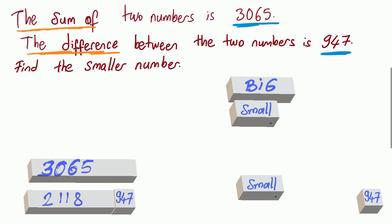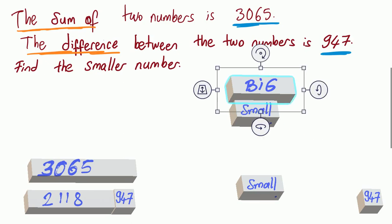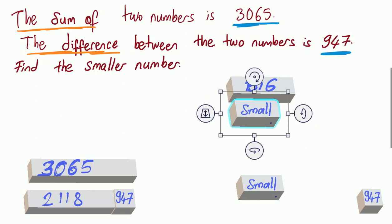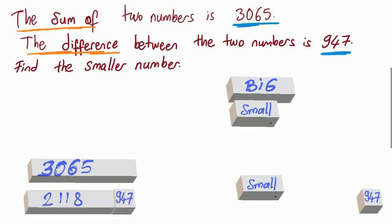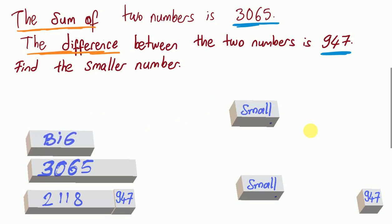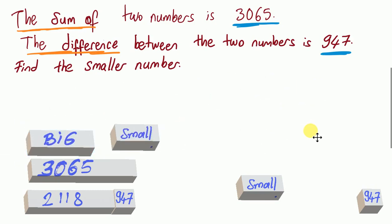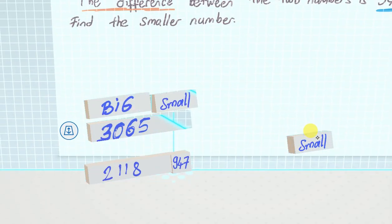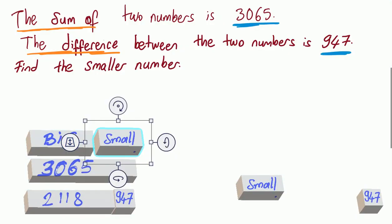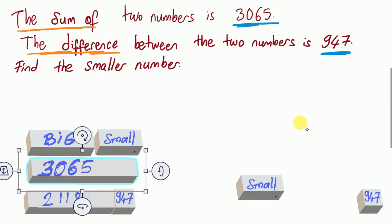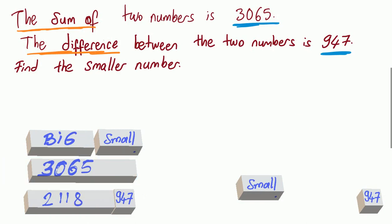We should understand the question first. If there is a difference between numbers, which means there is a big number and a small number. Looking at the first statement, the sum of two numbers means we will add them up. Big number plus small number is equal to 3065.